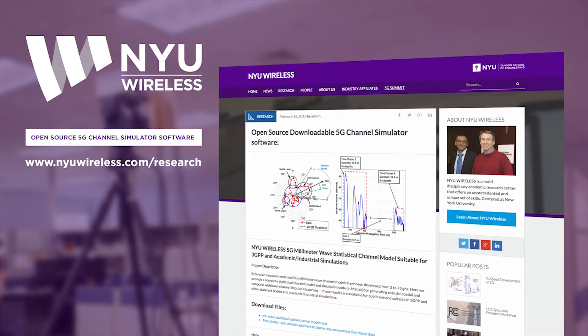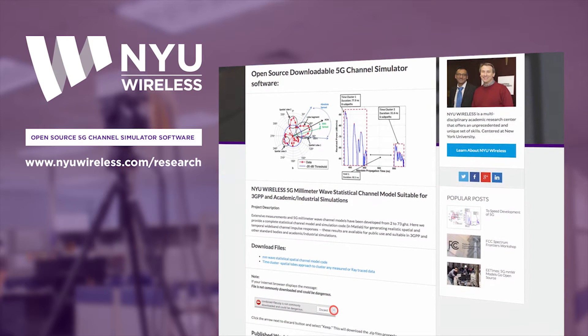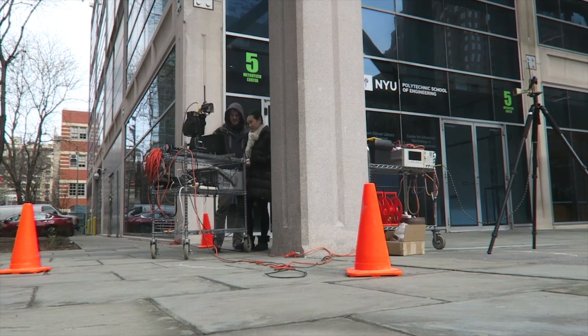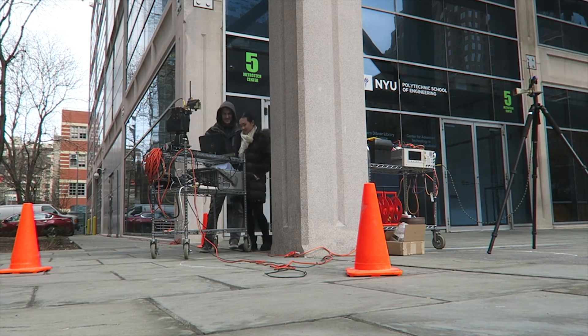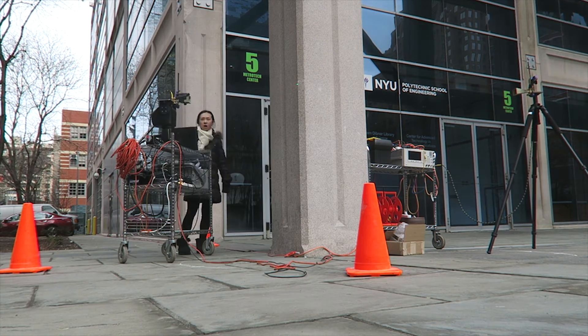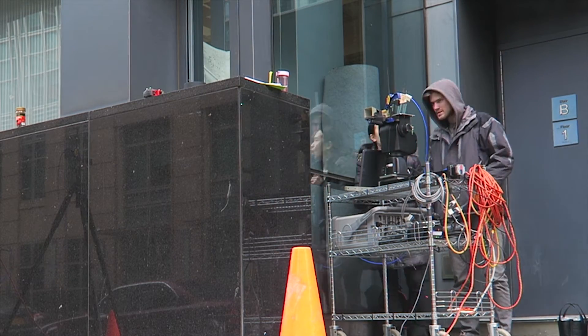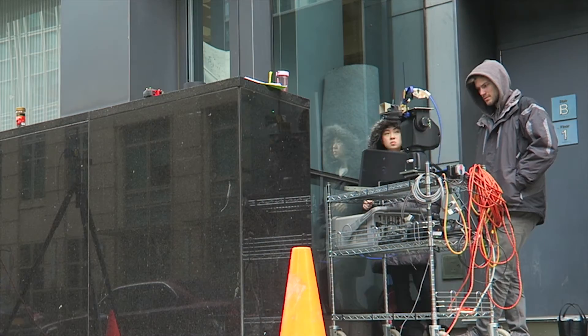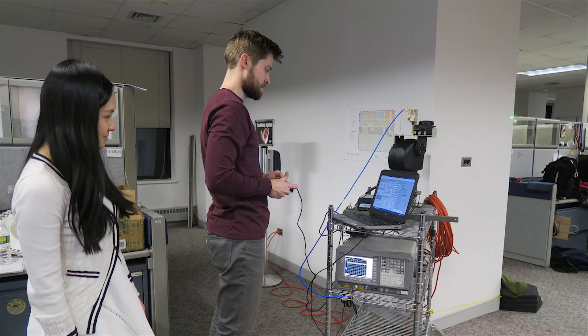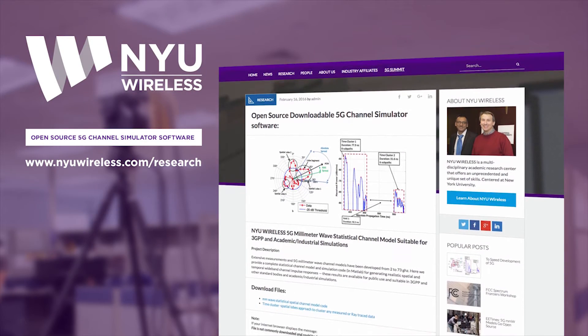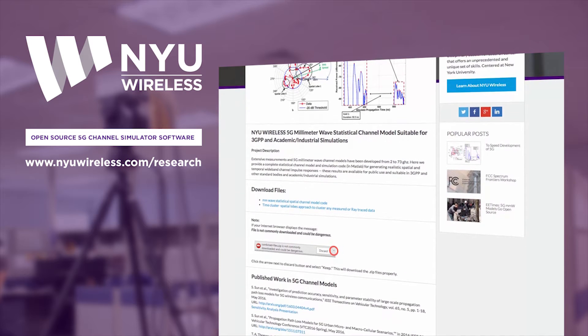In this project NYU Wireless provides a complete statistical channel model and simulation code for generating realistic spatial and temporal wideband channel impulse responses. These results are available for public use and suitable in 3GPP and other standard bodies and academic industrial simulations. These extensive measurements and 5G millimeter wave channel models have been developed from 2 to 73 gigahertz. The open source 5G channel simulator software is completely free and available to download from NYUwireless.com.